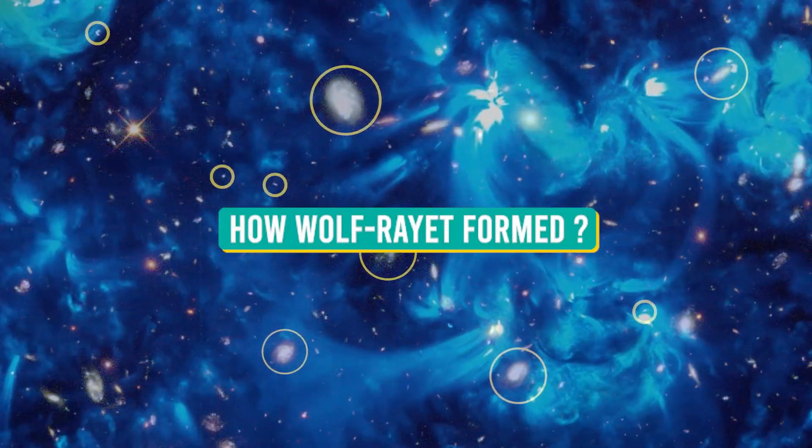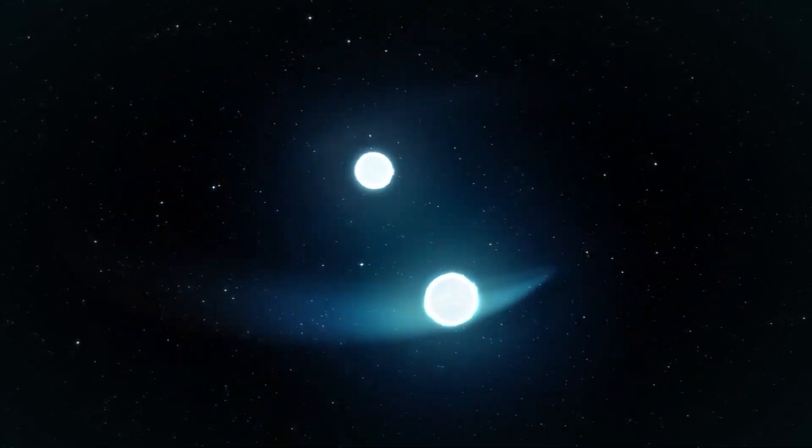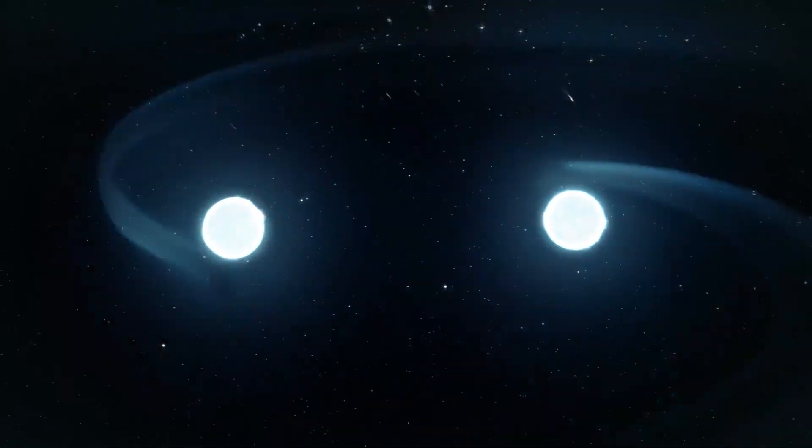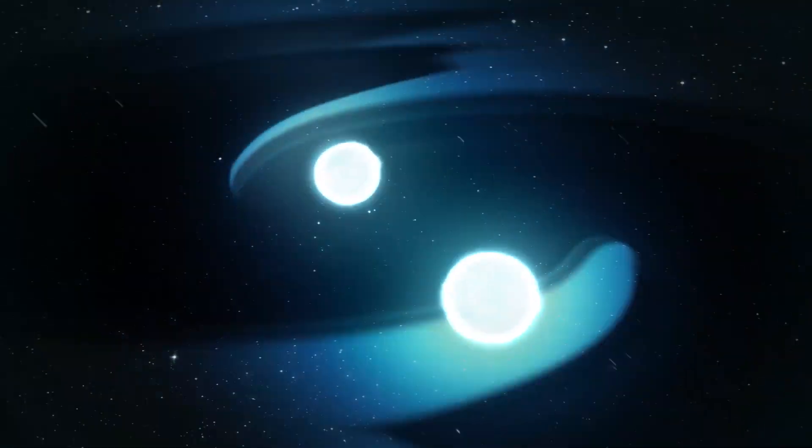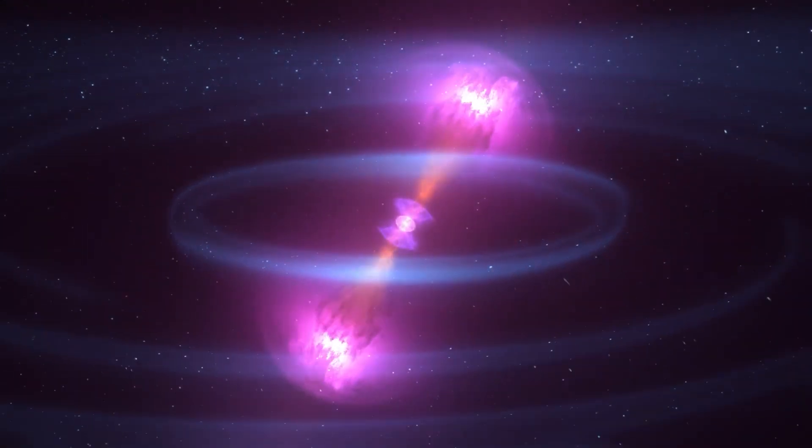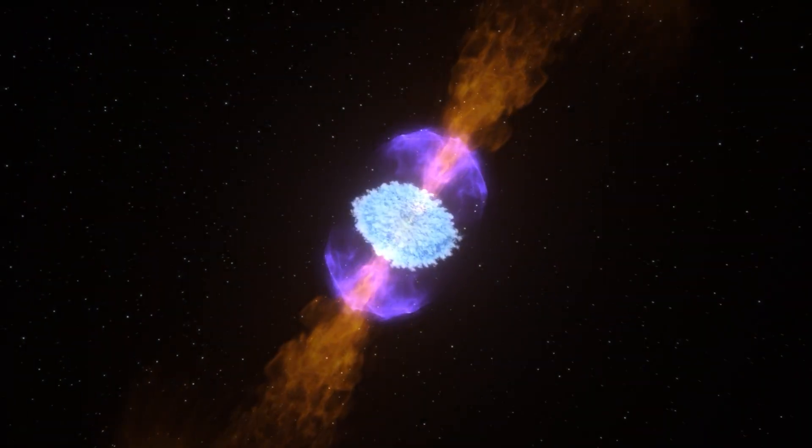How Wolf-Rayet formed. Each ring was formed when the stellar winds, streams of gas they blow into space, from the two stars collided as they approached one another, compressing the gas and generating dust. About every eight years, the stars' orbits bring them together. The dust loops mark the passage of time, much like the growth rings on a tree trunk.